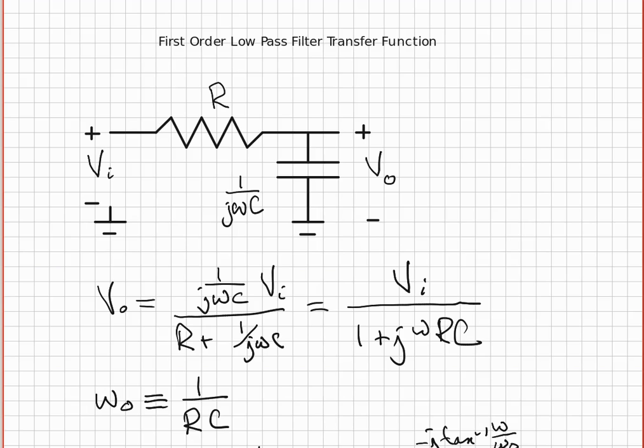Then we do a voltage divider equation and we end up with this expression for V out, which can be simplified by multiplying top and bottom by j omega C. We can make this expression simpler and make it a function of two variables, omega and omega zero, by letting 1 over RC become omega zero.